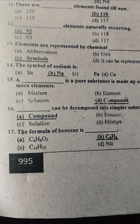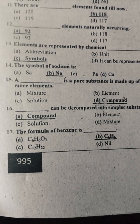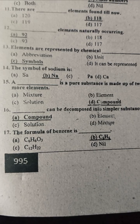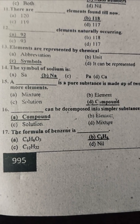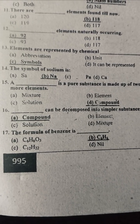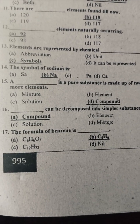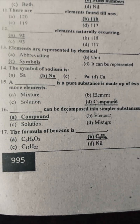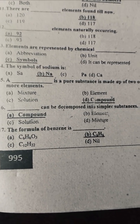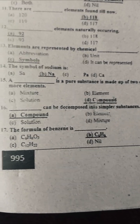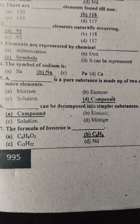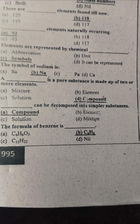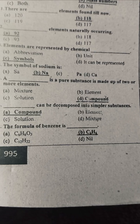Elements are represented by a chemical abbreviation called a symbol. The correct option is C — symbol. The symbol of sodium is: SA, NA, FA, CA. The correct option is NA. Sodium's symbol is NA.